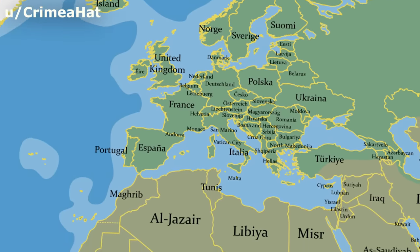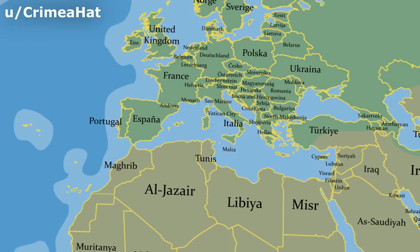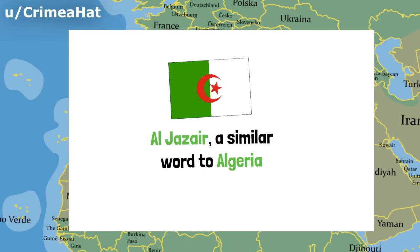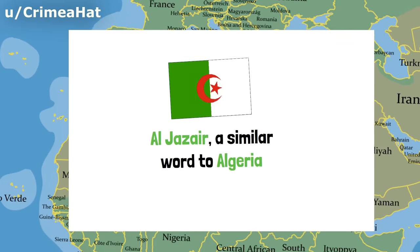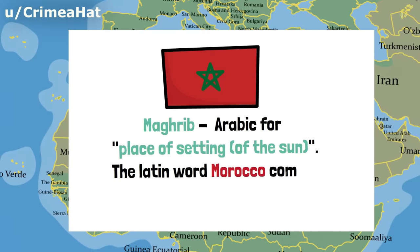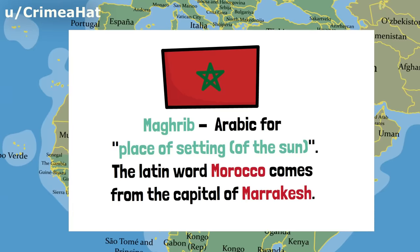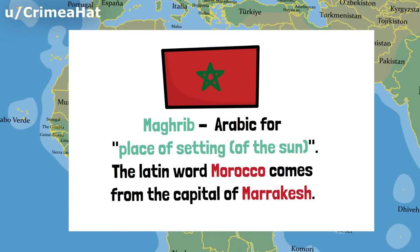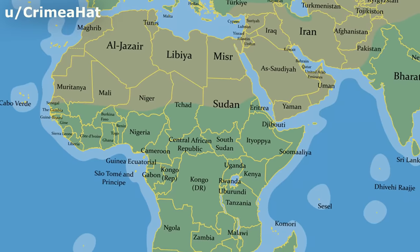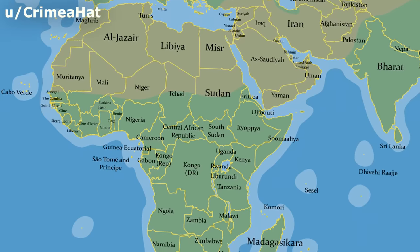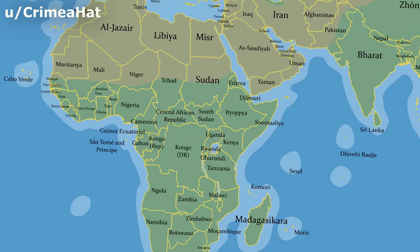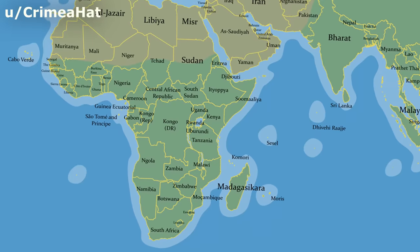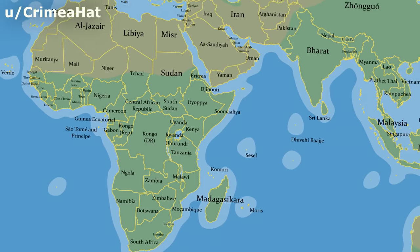In Africa, the direct translation of endonyms mostly corresponds to the English exonyms, due to the colonization of European powers of these countries. The only exception seemed to be Egypt, as we already saw. Algeria is Al-Jazāʾir, a similar word to Algeria but in the original Arabic. Morocco is Maghrib, an Arabic term literally meaning 'place of the setting of the sun,' while the Latin word Morocco comes from the capital of Marrakesh. It's interesting because Maghreb in some European countries is used to describe an entire region in addition to just the country. All other African nations seem to have their endonyms being the same as their exonyms in English, the only difference being spelling and pronunciation in the native languages.